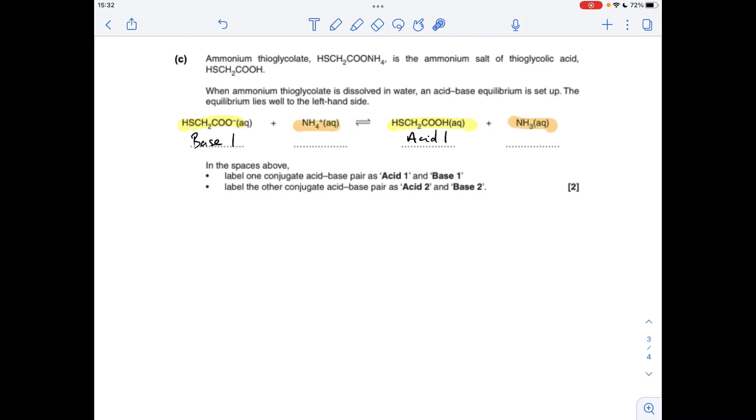And if we have a look at the other pair, so we've got the ammonium ion and ammonia. So what's going on here, to go from that to that, that's donating a proton. So this is an acid, but it's from a different pair. So we call it acid 2, which means that the ammonia is base 2.